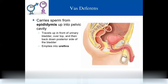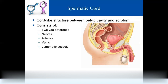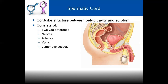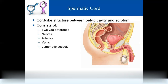The vas deferens carries sperms from the epididymis to the urethra. It loops around the urinary bladder and finally joins the urethra. The spermatic cord links the testis to the body.